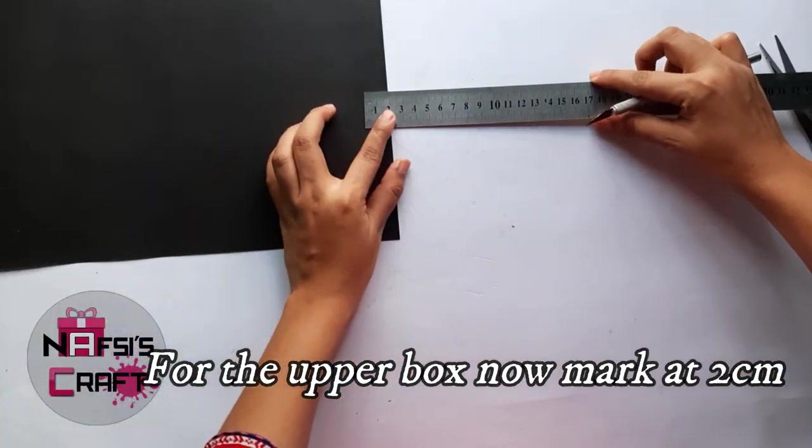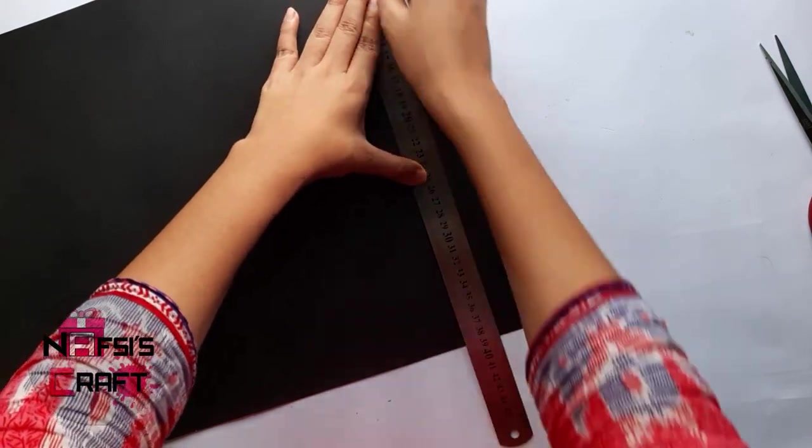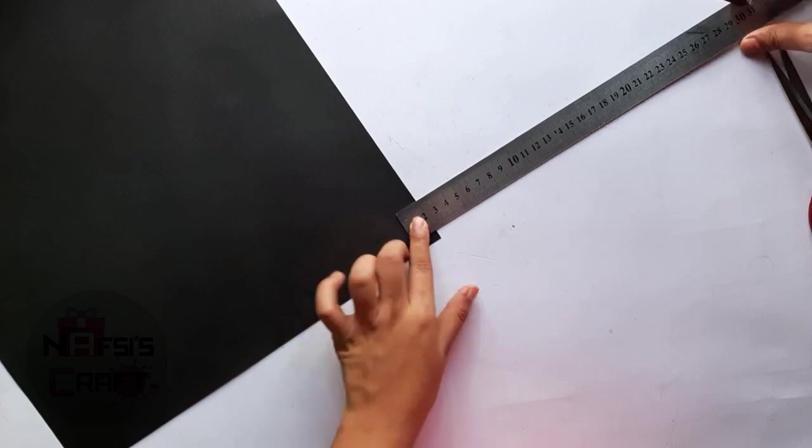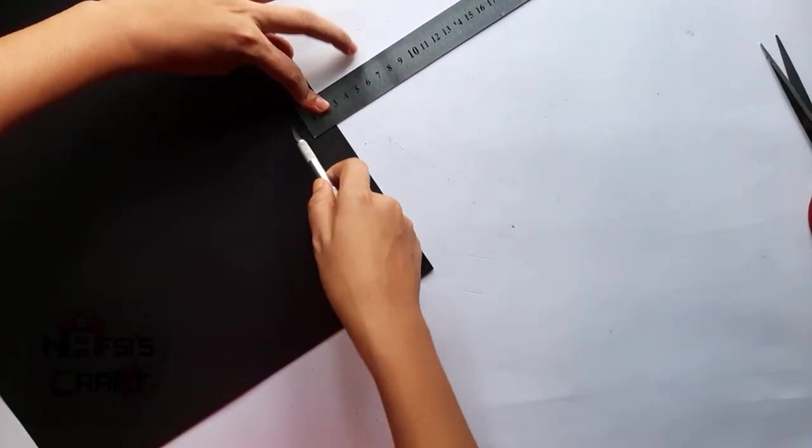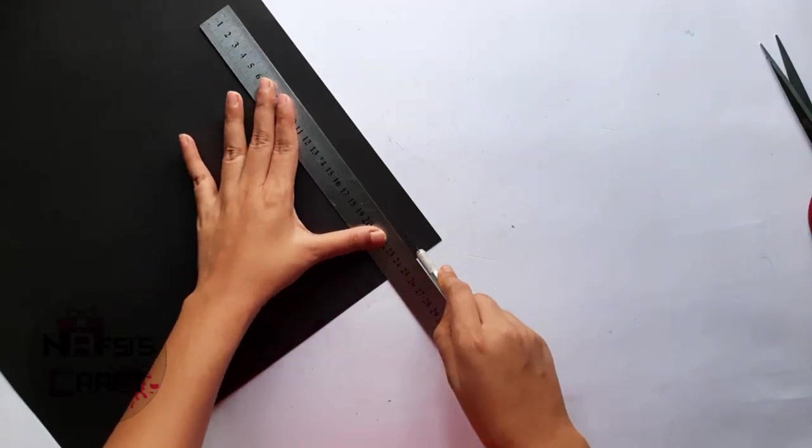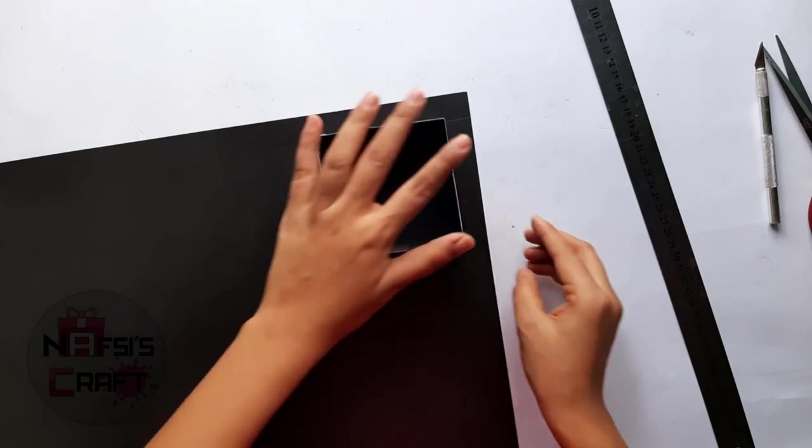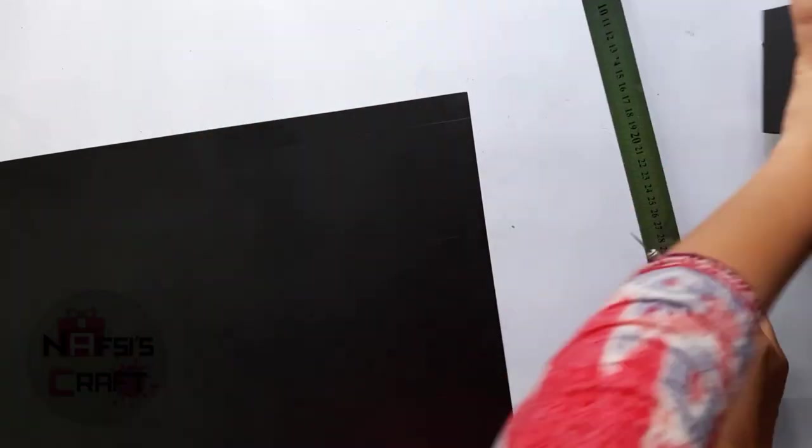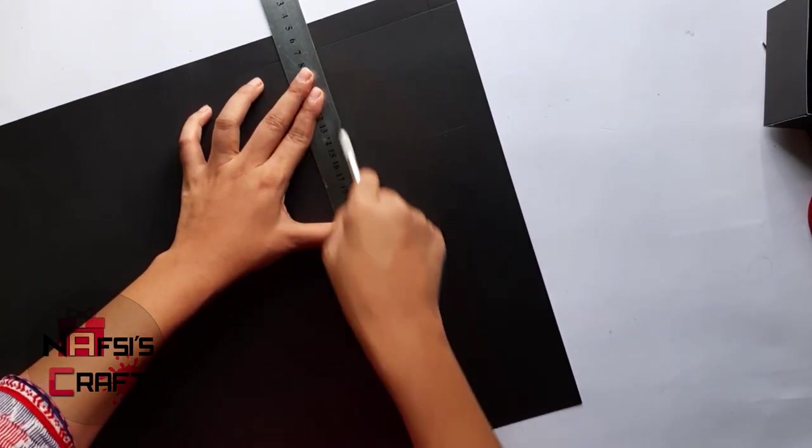Now work with upper box. Mark at 2cm. I am also taking 2cm for the other side. And attach them. Now put the box in the middle and then make outline of this box. After this I am going to also take 2cm.